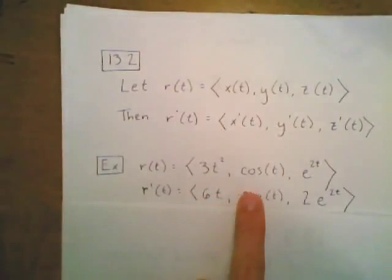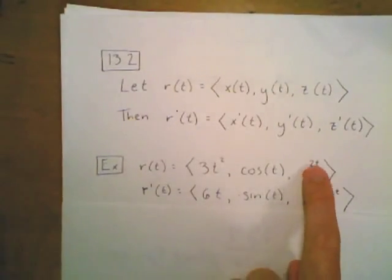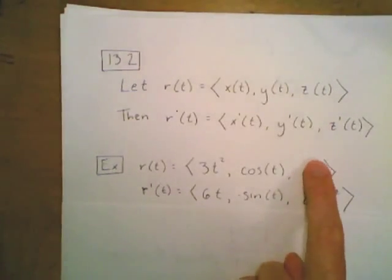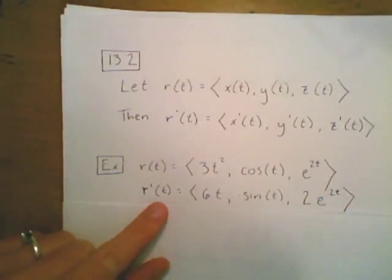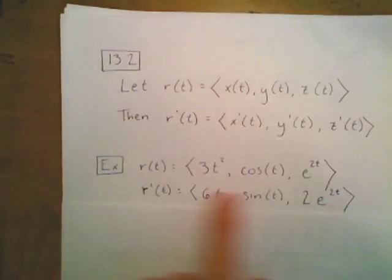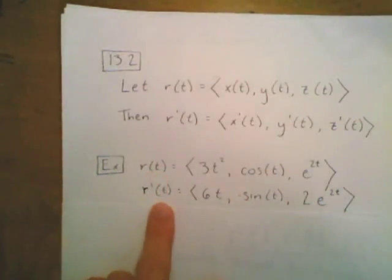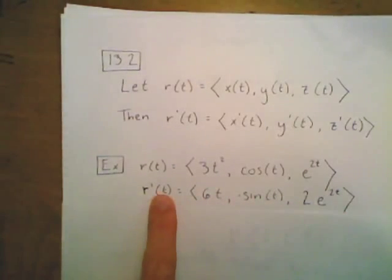The derivative of 3t squared is 6t. The derivative of cos t is negative sine t. And the derivative of e to the 2t, by the chain rule, is 2 times e to the 2t. Notice, just like derivatives of single variable functions, the original function is a vector-valued function and the derivative is also a vector-valued function — the output is a vector and the input is the parameter t.